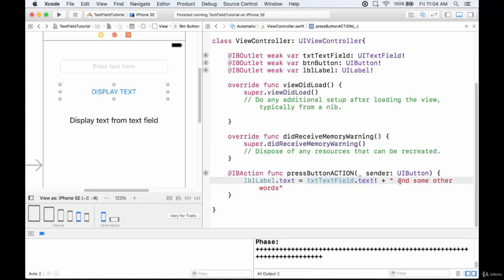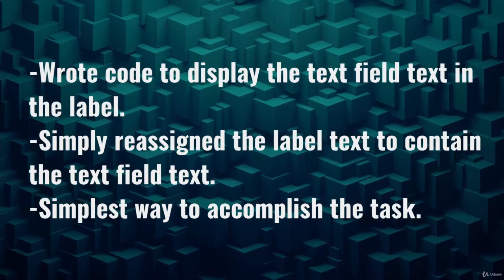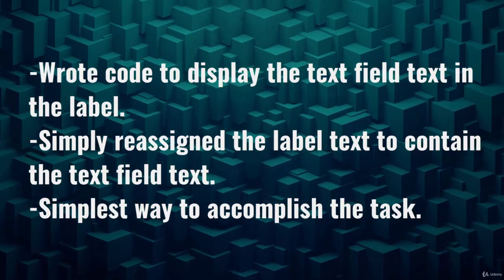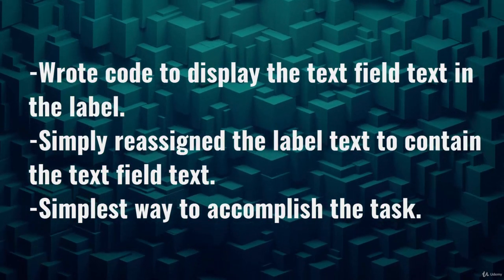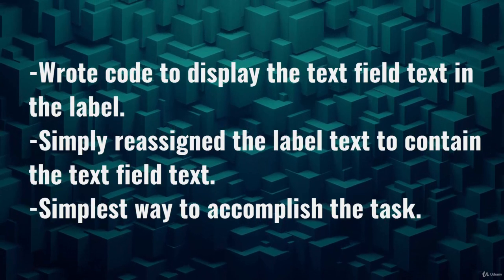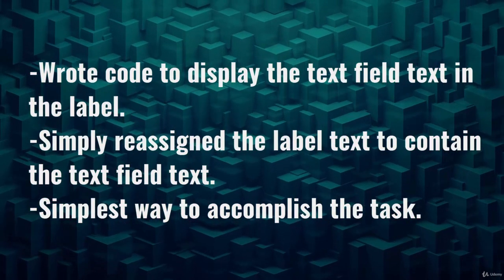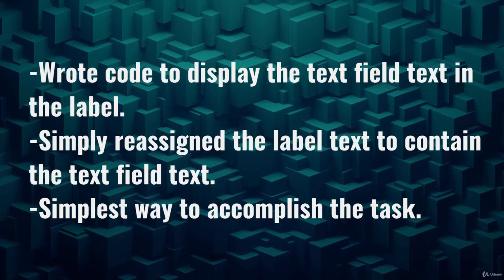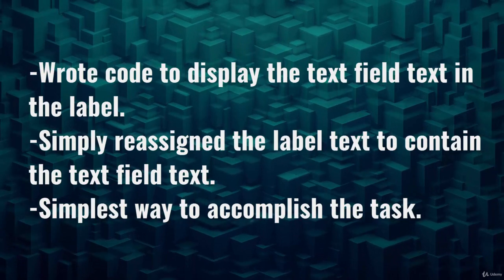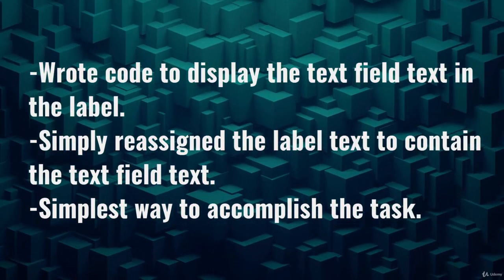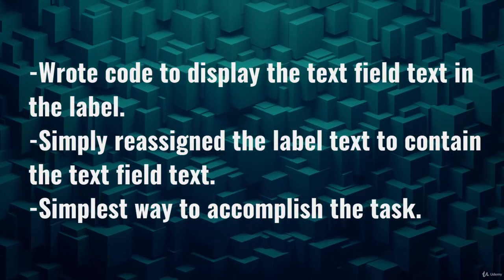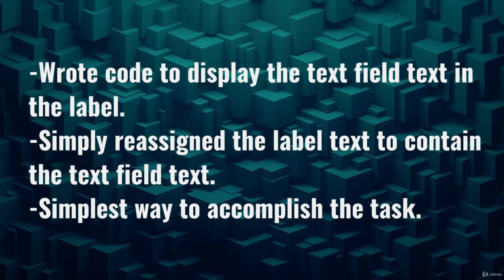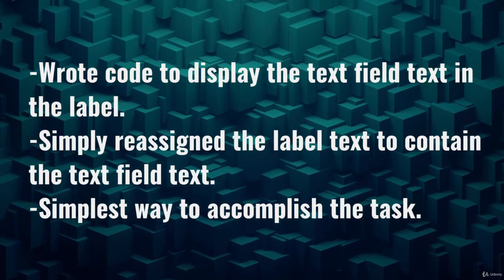In this part we wrote code to display the text field text within a label — the task we'd been trying to accomplish all along. We went into the button handler function and reassigned lblLabel.text to equal txtTextField.text, taking the text from the field and assigning it to the label as soon as the button is pressed. We saw it working. This is the simplest approach using just one line of code. Next we'll look at the more complicated way and discuss the pros and cons of each.